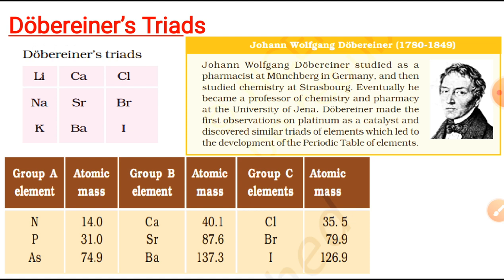In the year 1817, Dobereiner, who was a German chemist, made an attempt to arrange elements with similar properties into groups having three elements each. That is why these groups were called triads. Dobereiner showed that when the three elements in each triad were arranged in order of increasing atomic mass, the atomic mass of the middle element was roughly the average of the atomic masses of the other two elements.